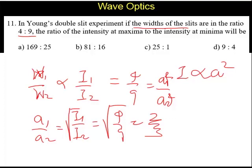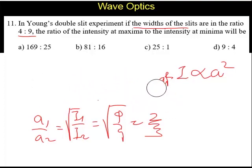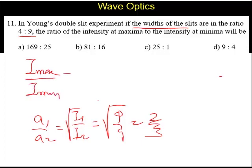Since we have calculated the amplitude ratio, we can now calculate the maximum and minimum intensities. I maximum divided by I minimum is A1 plus A2 the whole squared, divided by A1 minus A2 the whole squared.